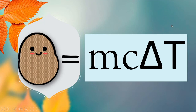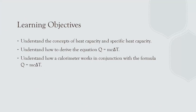Hi everyone, welcome to Potato Chemistry. In this video, we'll be discussing two physical quantities: heat capacity and specific heat capacity, and we'll also discuss how the formula q = mcΔT is derived. By the end of this video, you should be able to explain what heat capacity and specific heat capacity are, as well as give their definitions both in equation and in word. You should also be able to derive the equation q = mcΔT.